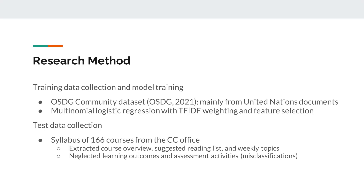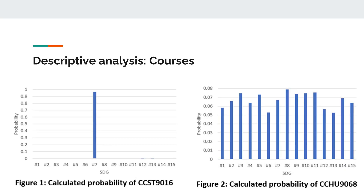In this study, we used machine learning techniques to test 166 Common Core courses in a university with SDGs, then analyze the results based on visualizations. Our training dataset comes from the OSDG public committee dataset, which the committee had verified. Key descriptions of Common Core courses have been used for the classification. We used the multinomial logistic regression algorithm for the classification. Descriptive analysis at the course level and curriculum level have been included to illustrate the proposed approach.